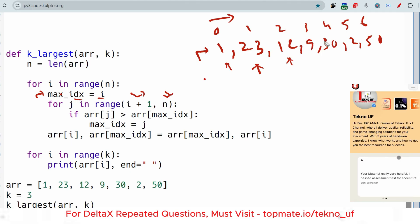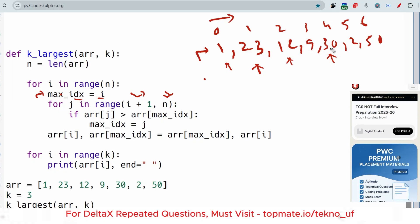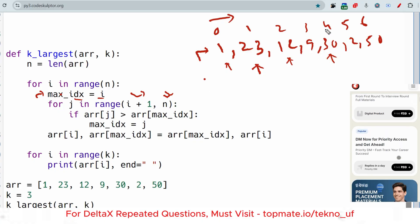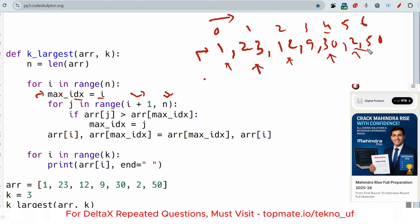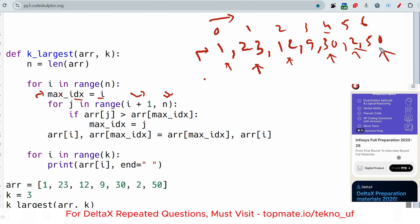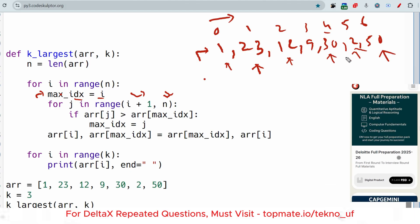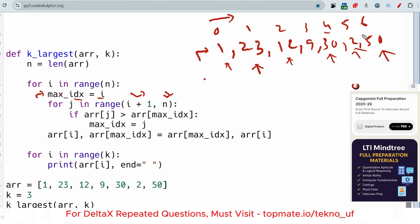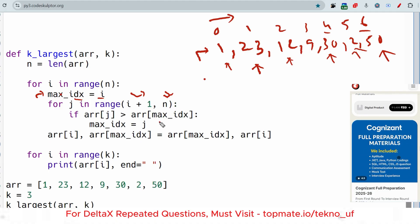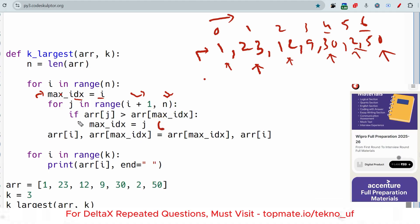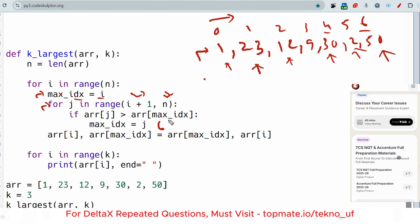In the next iteration, we check if array[j] value 12 is greater than the earlier value 23 - no, so it will skip. When it's here, it will check 30 is greater than 23, so the max_idx will be 4. In the last iteration, it will check that 50 is greater than 30, so the max_idx will be 6.